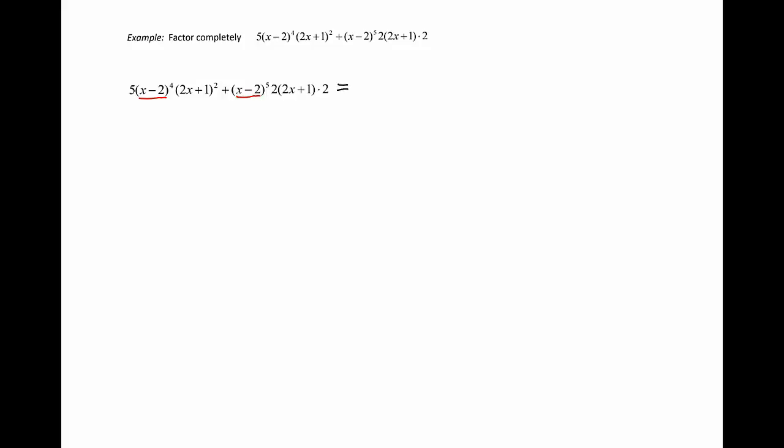In the first group we have x minus 2 to the fourth power, which means that x minus 2 appears in this product four times, while in the second group x minus 2 appears five times. Also I have 2x plus 1 in the first group and 2x plus 1 in the second group. The first group contains 2x plus 1 as a factor twice, while the second one only once.